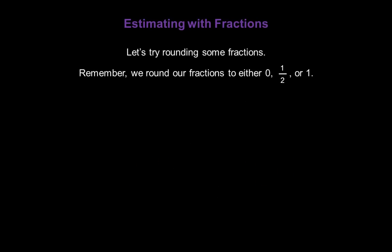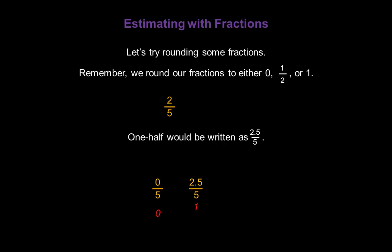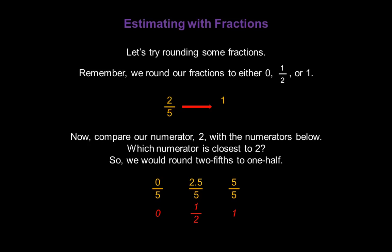Let's try rounding some fractions. Remember, we're going to round our fractions to either 0, 1 half, or 1. Let's start with 2 fifths. For this fraction, 0 would be written as 0 over 5, 1 half would be written as 2 and a half over 5 (because 2 and a half is 1 half of 5), and 1 would be written as 5 over 5. Comparing the numerator 2 with those reference numerators, the closest is 2 and a half. That means we would round 2 fifths to 1 half.